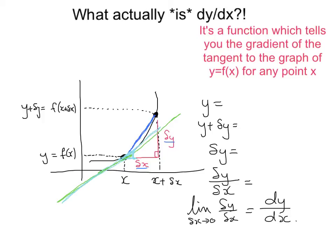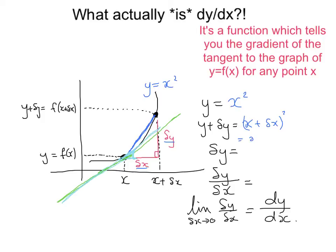I'll illustrate this with the example y equals x squared. So y is x squared. If I increase x by a little bit to x plus delta x, then y plus delta y is the value of the function at that point: x plus delta x all squared, which expands to x squared plus 2x delta x plus delta x squared. Subtracting y — which is x squared — from both sides to isolate delta y leaves us with 2x delta x plus delta x squared.